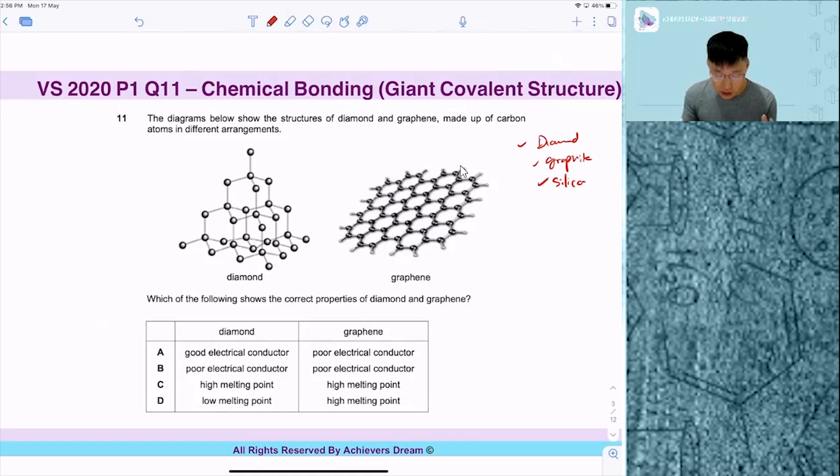Take a look at graphene. If you know what graphite is - graphite is like layers - graphene is just one layer of graphite, a single layer. It is also a giant covalent structure. So when I begin this question, the first thing I will conclude is that both are giant.